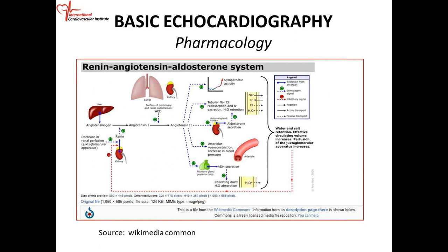When we talk about angiotensin-converting enzyme inhibitors, you need to know a little about the renin-angiotensin system. This is a very important system because it regulates blood pressure to a large extent — it's one of the systems that regulates blood pressure and fluid status of an individual. The first thing we get is renin, which is an enzyme produced in the kidneys.